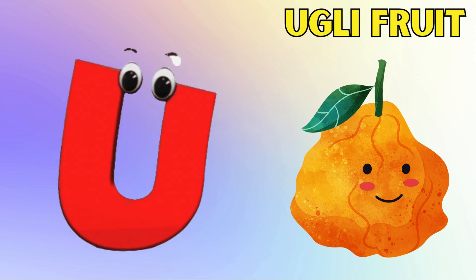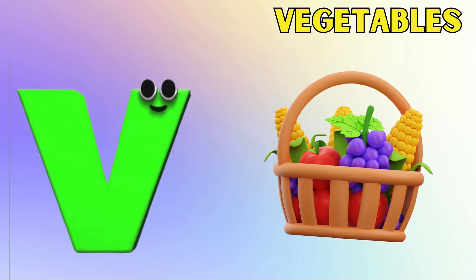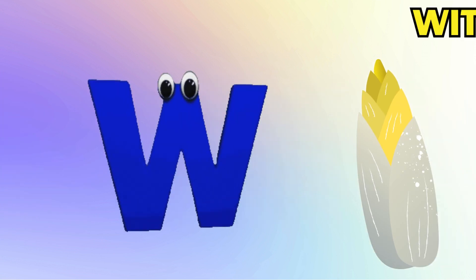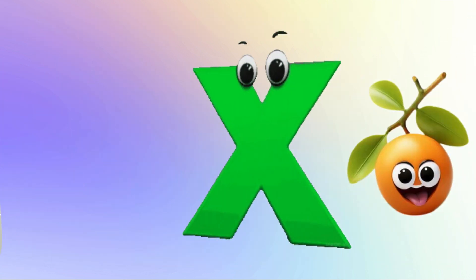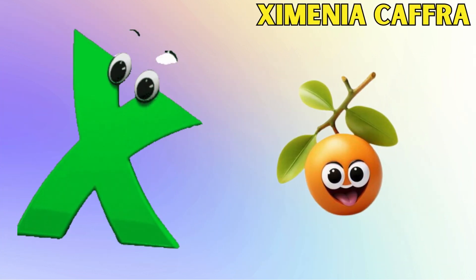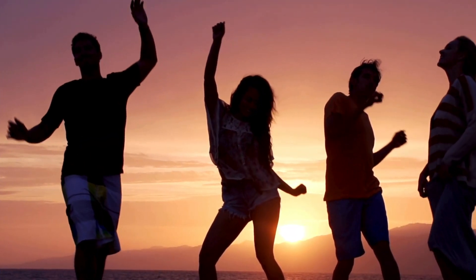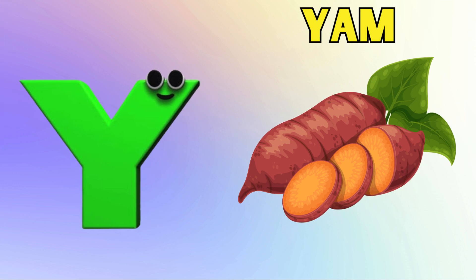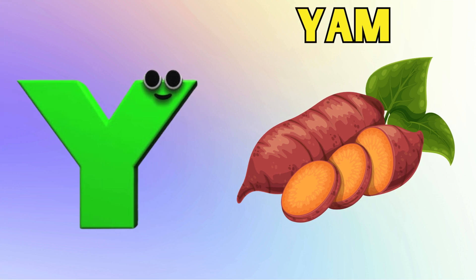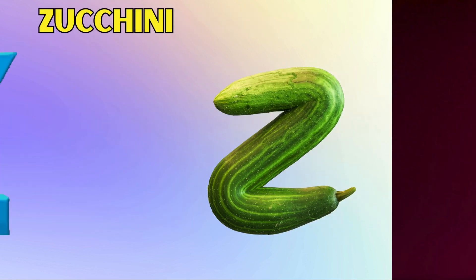U is for ugly fruit, ugly fruit. V is for vegetables, vegetables. W is for witloof, witloof. X is for ximenia, ximenia. Y is for yam, yam. Z is for zucchini, zucchini.